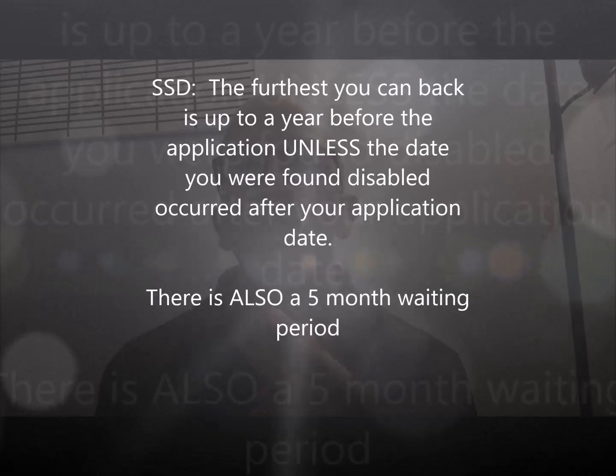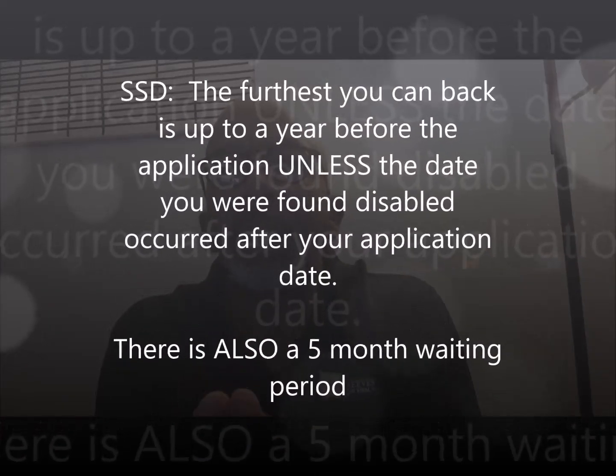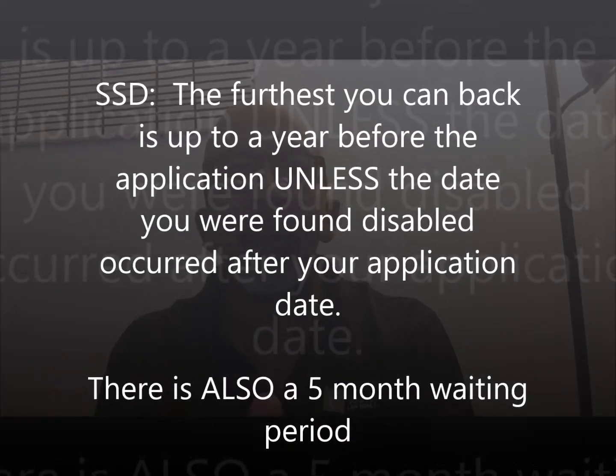Now let's talk about SSD. For SSD, the earliest you can go back is up to one year before your application date, again unless you were found disabled after your application date. There's also a five-month waiting period with SSD. So whatever date they find you disabled, add five months — that's when your benefits actually start. It gets a little tricky if you're dealing with an older onset date greater than a year before your application.